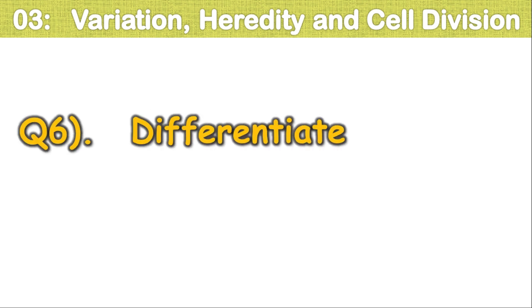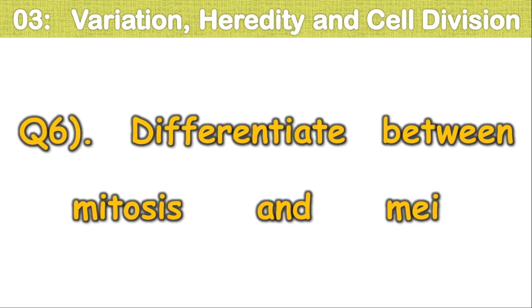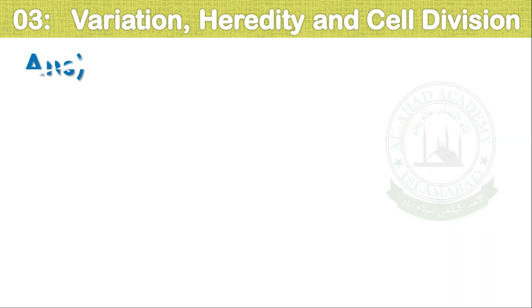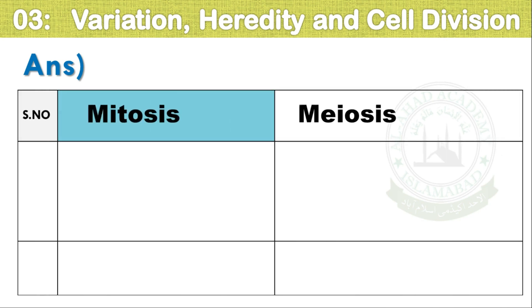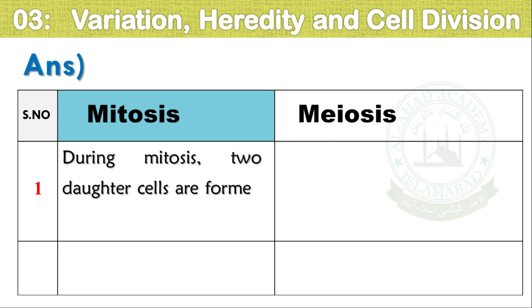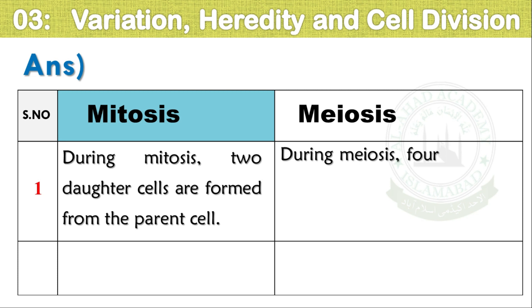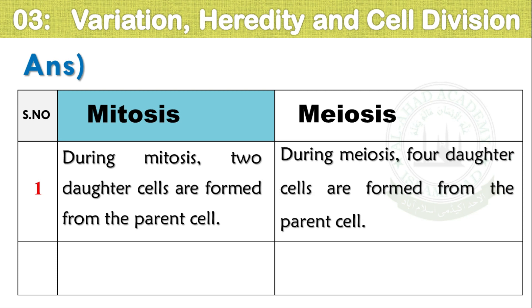Question number six: Differentiate between mitosis and meiosis. During mitosis, two daughter cells are formed from the parent cell. During meiosis, four daughter cells are formed from the parent cell.